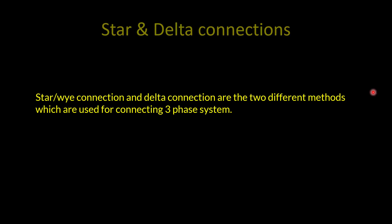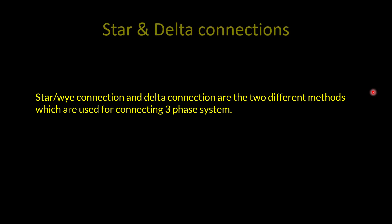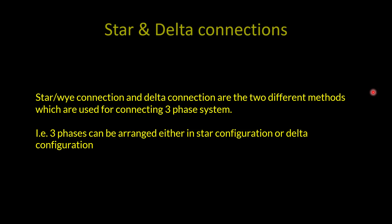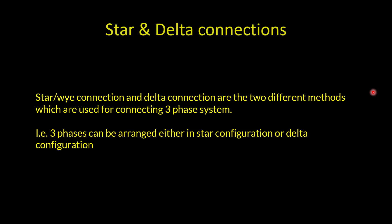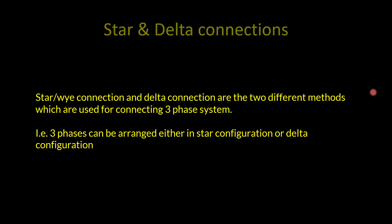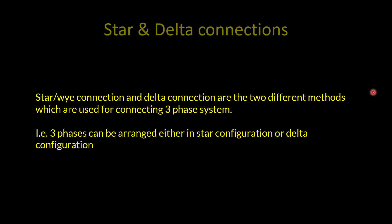Star or Y connection and delta connection are the two different methods used for connecting a three-phase system. Three phases can be arranged either in star configuration or delta configuration. In a three-phase system, there are three phases: red, yellow, and blue. These three phases can be arranged either in star configuration or in delta configuration.